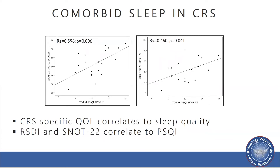Does CRS-specific quality of life correlate to sleep quality — i.e., do increasing levels of sleep dysfunction correlate to increasing severity in quality of life? Two figures demonstrate the total PSQI scores on the x-axis with both the SNOT-22 and the RSDI on the y-axis, showing that both significantly and positively correlate to sleep dysfunction, demonstrating that increased sleep dysfunction is associated with worse overall quality of life.